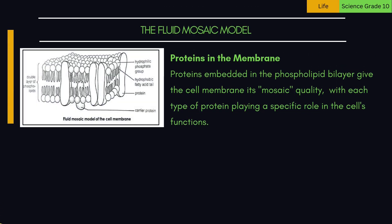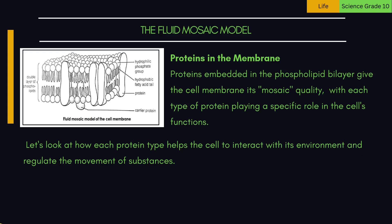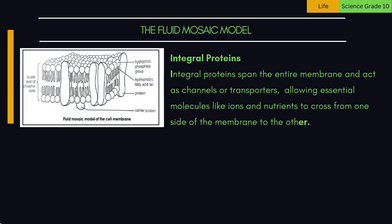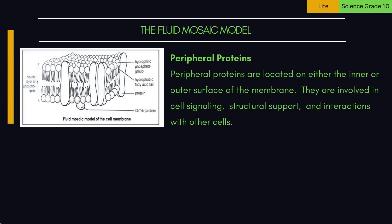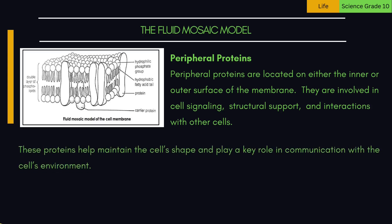3. Proteins in the membrane — proteins embedded in the phospholipid bilayer give the cell membrane its mosaic quality, with each type playing a specific role. Integral proteins span the entire membrane and act as channels or transporters, allowing essential molecules like ions and nutrients to cross from one side to the other. Peripheral proteins are located on either the inner or outer surface of the membrane; they are involved in cell signaling, structural support, and interactions with other cells, helping maintain the cell's shape and communication with its environment.